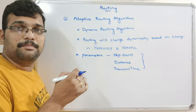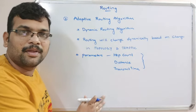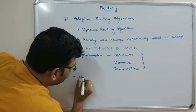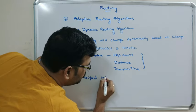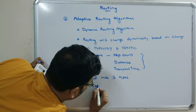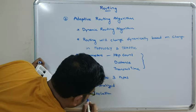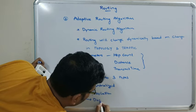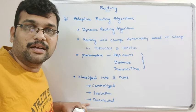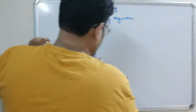Based on these three parameters — hop count, distance, and transmit time — the routing will be decided from the current place to the next place. Adaptive routing algorithms are classified into three types: centralized, isolation, and distributed routing algorithms. Now we will see each one briefly.